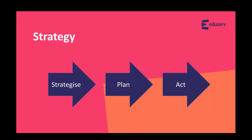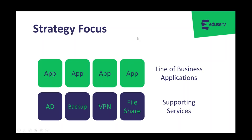Moving on to what a public cloud adoption could look like: we suggest developing a strategy coupled with a roadmap of about one to two years as a good place to start. Once the strategy is in place, planning and executing individual projects aligned with that strategy can follow. We summarize this as strategize, plan, act. It can be a waterfall approach across your entire estate, or a more agile approach looking at isolated elements of your ICT and transforming them as you go.